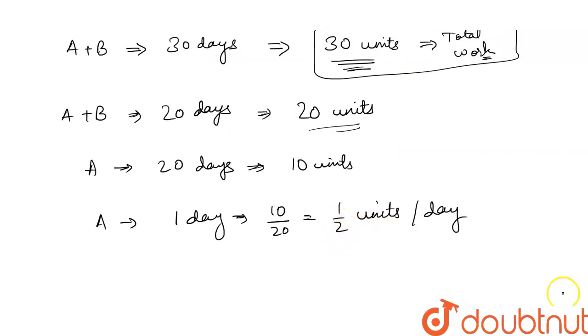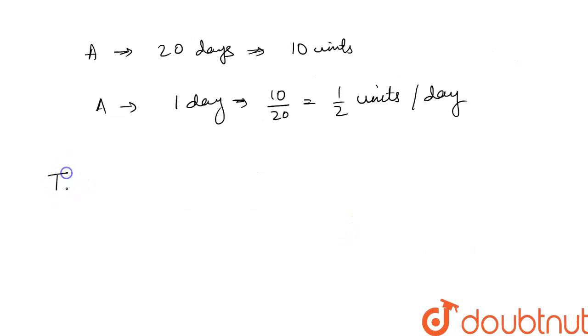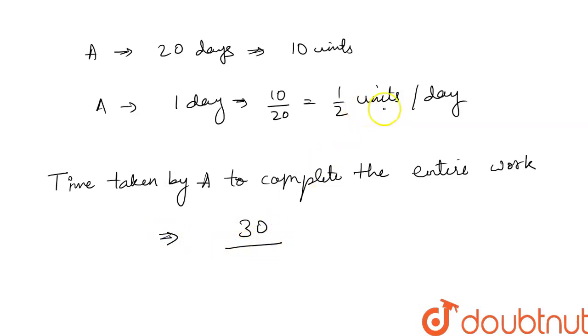Time taken by A to complete the entire work: total work divided by half units per day. Total work is 30 units, divided by half unit per day. This is our final answer: 60 days.